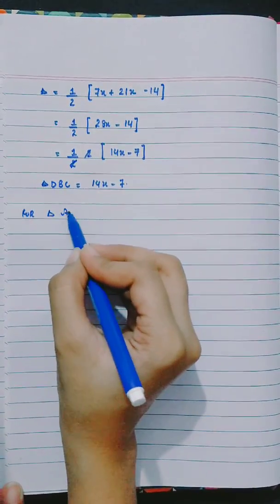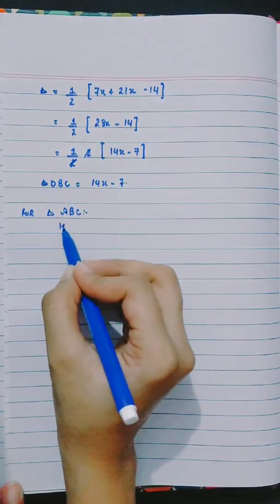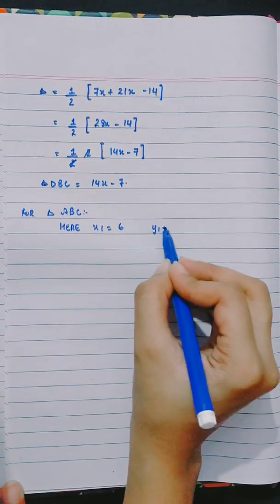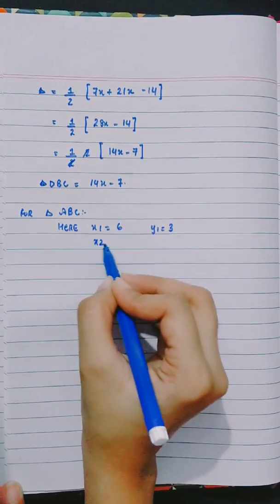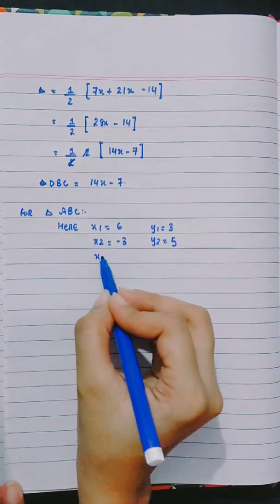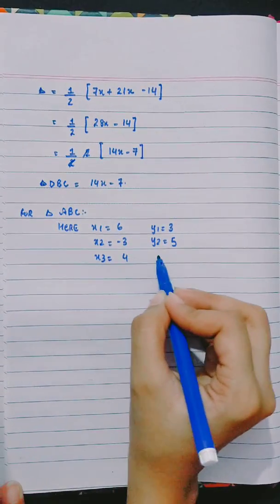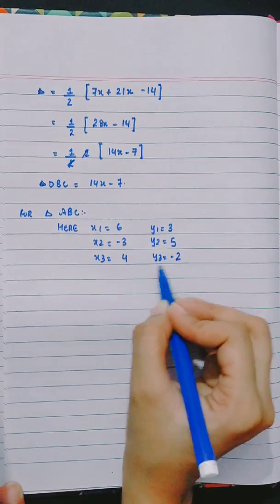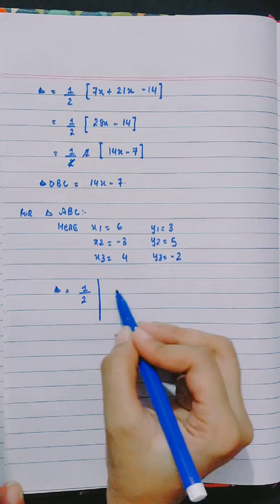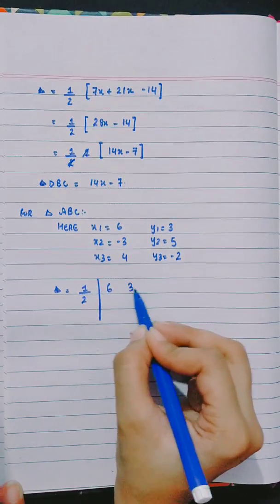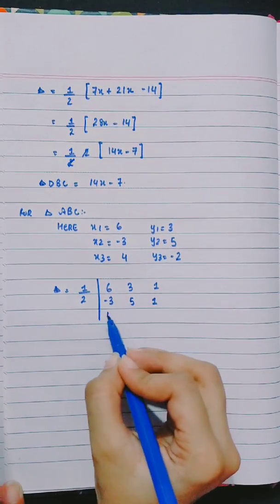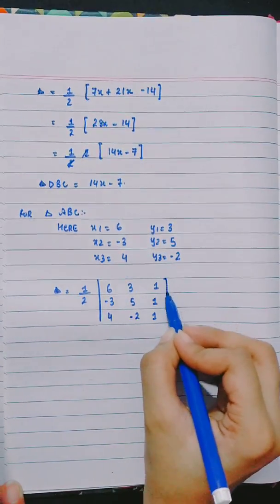Now for triangle ABC, here x1 is 6, y1 is 3, x2 is -3, y2 is 5, x3 is 4, y3 is -2. Area is equal to half of determinant: 6, 3, 1, -3, 5, 1, 4, -2, 1.